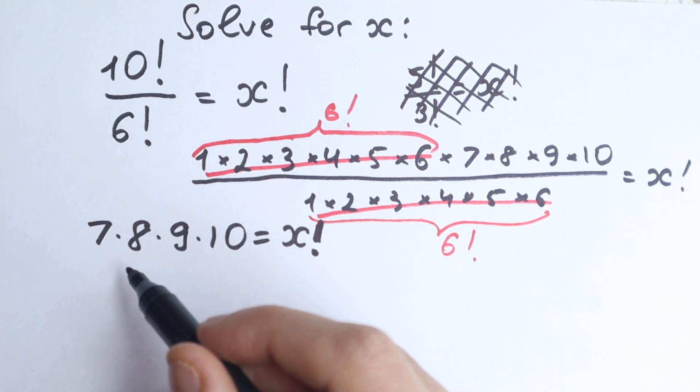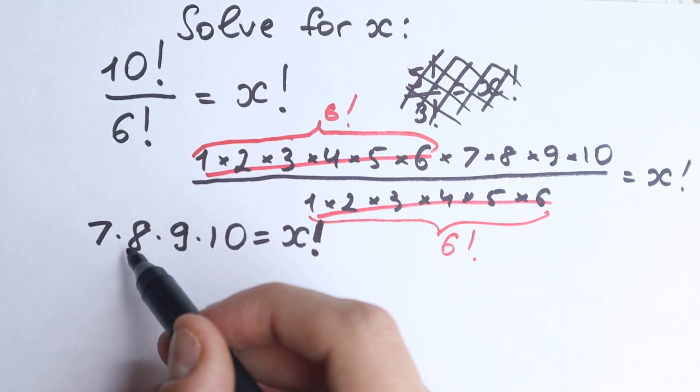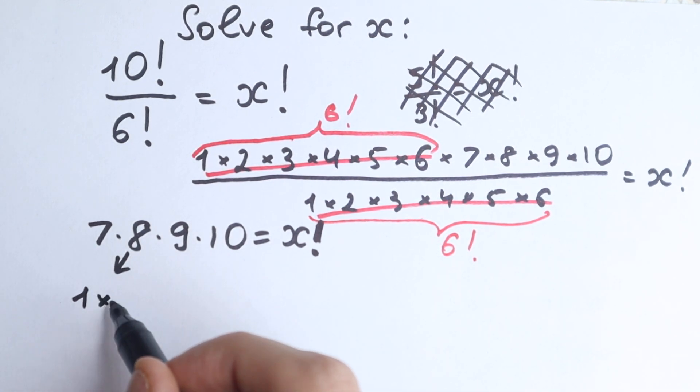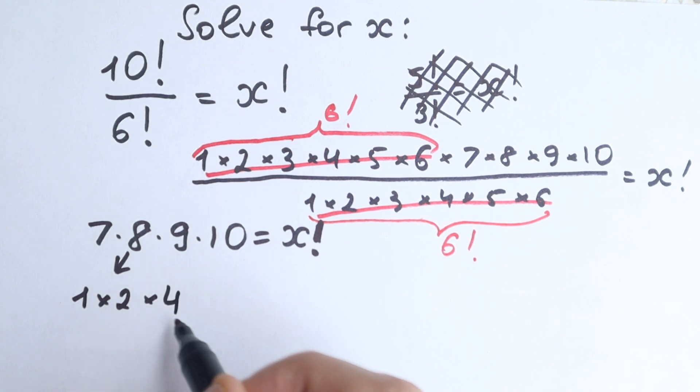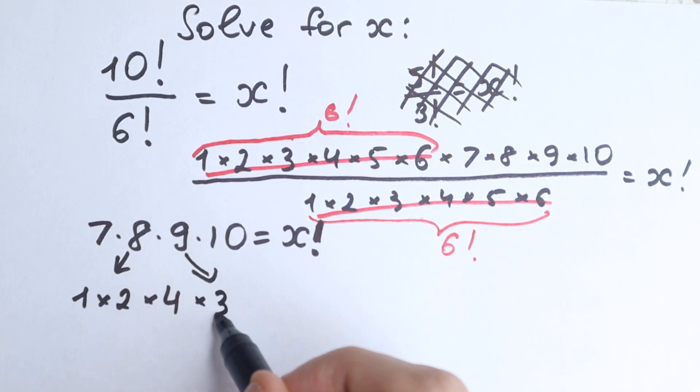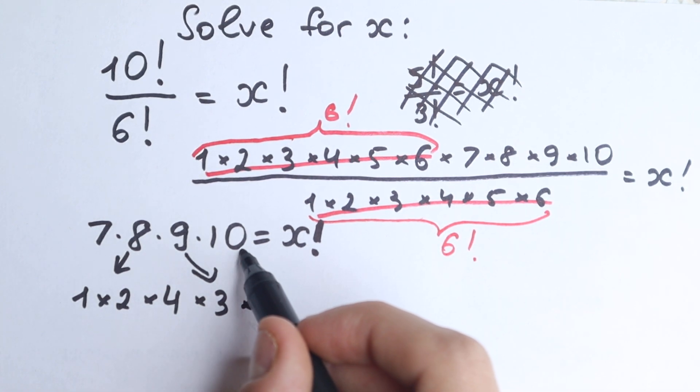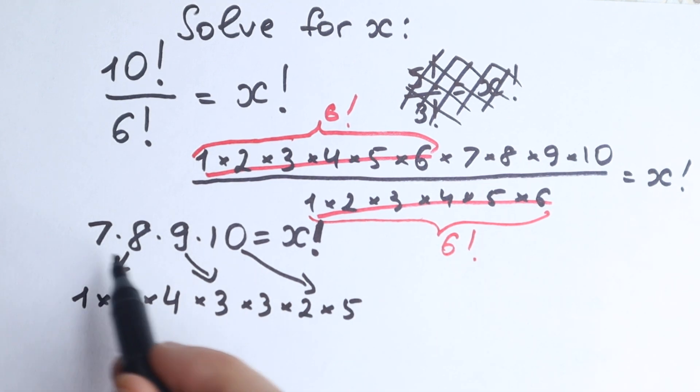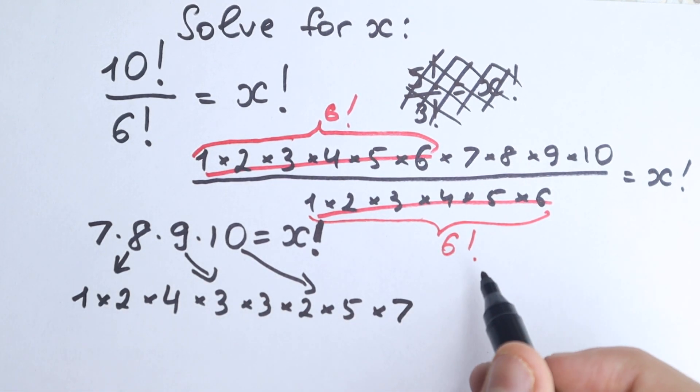Right now, let's try to express this, for example, 8 as 1 times 2 times 4, yeah? This 8 can be written as 1 times 2, for example, times 4. This 9 can be written as 3 times 3, so times 3 times 3. This 10 can be written as 2 times 5 times 2 times 5, and in the end I write this 7, so times 7, okay?